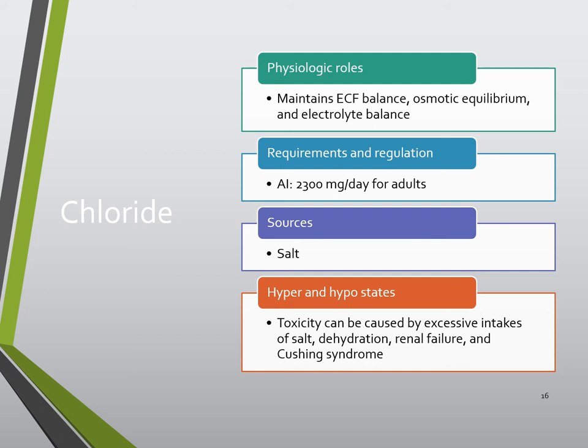The primary source of chloride is table salt — sodium chloride. When there is too much chloride, toxicity is caused by excessive salt intake, dehydration, or renal failure, and can also be associated with Cushing's syndrome.